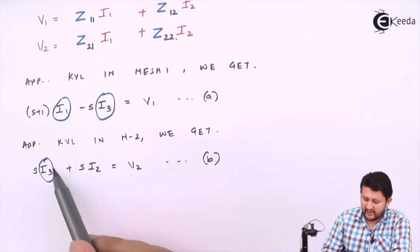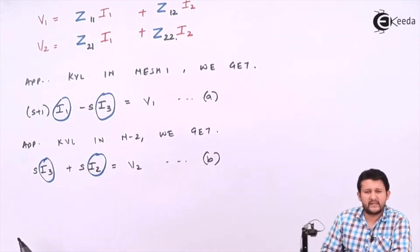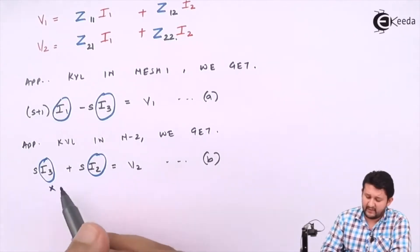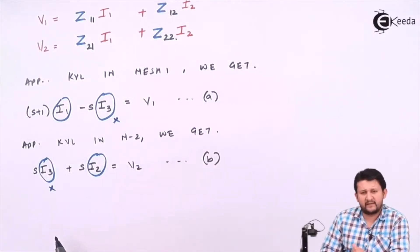Your V2 is in terms of I1 and I2. The logic says your V2 should be in terms of I1 and I2. There should not be any other parameters like I3. But you have I3 and I2, so we need to replace I3.